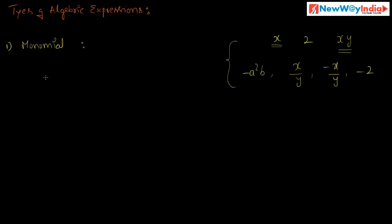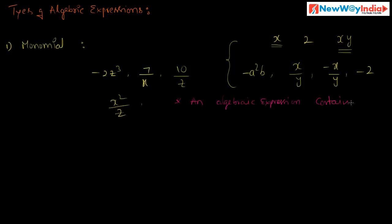You can consider different types of monomials — they all contain only one term. An algebraic expression containing only one term is called a monomial. If any algebraic expression contains only one term, then it is called a monomial.